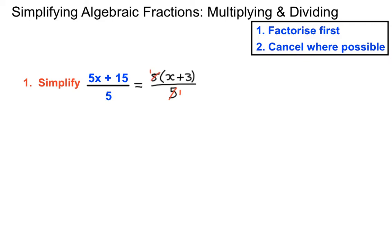We put those little 1 markings there for a reason. In this case we're left with x plus 3 — technically x plus 3 over 1. When we've got a 1 on the bottom of a fraction we don't necessarily need to write that in, but if we've got a 1 on the top of a fraction we do desperately need to write that one in, otherwise we'll get the question wrong. So that ends up being x plus 3.